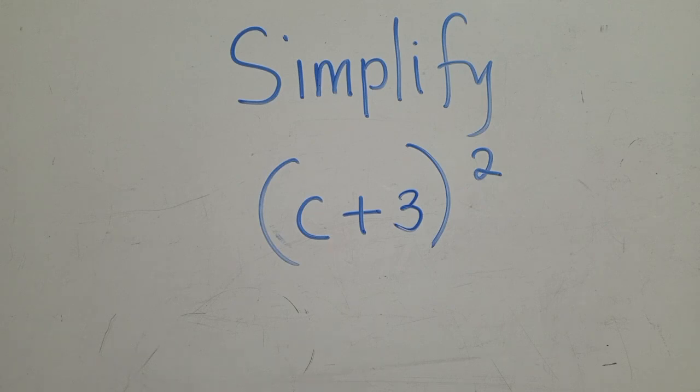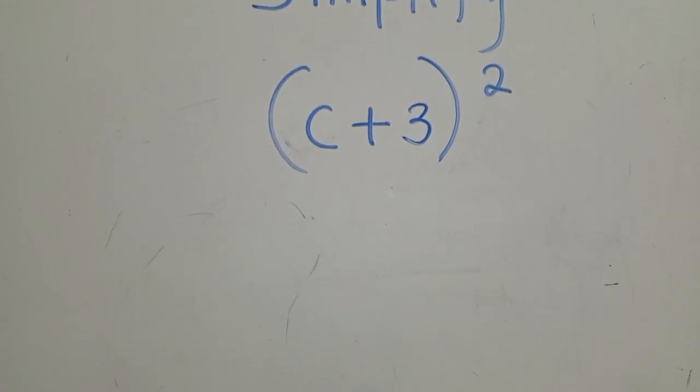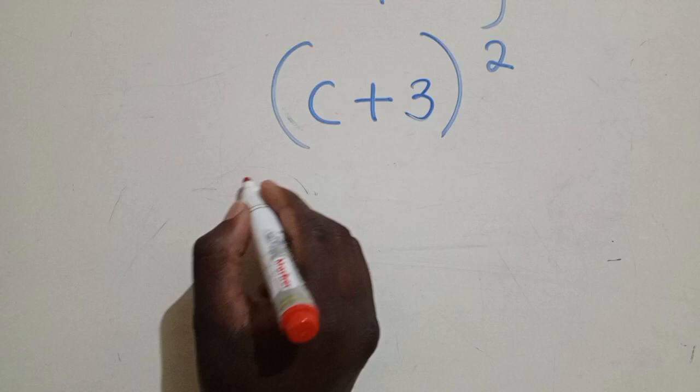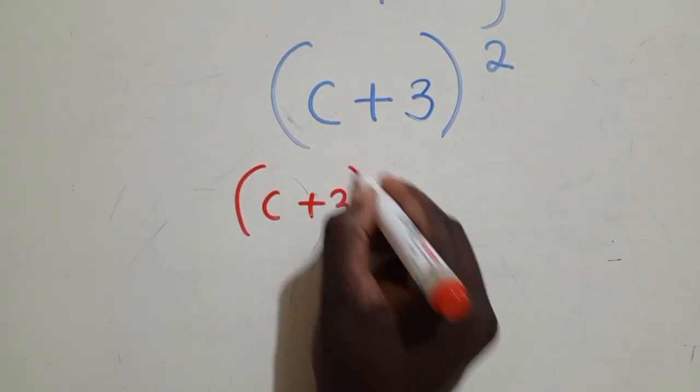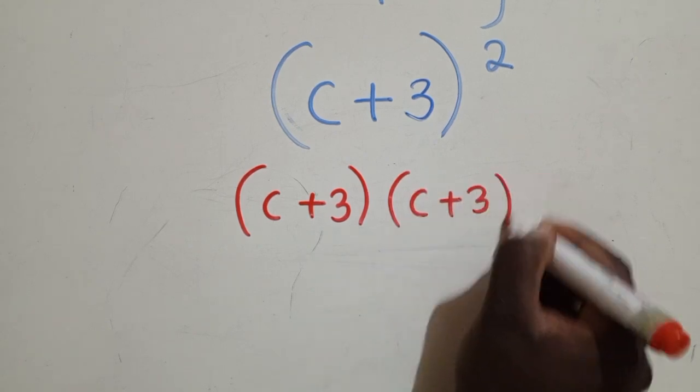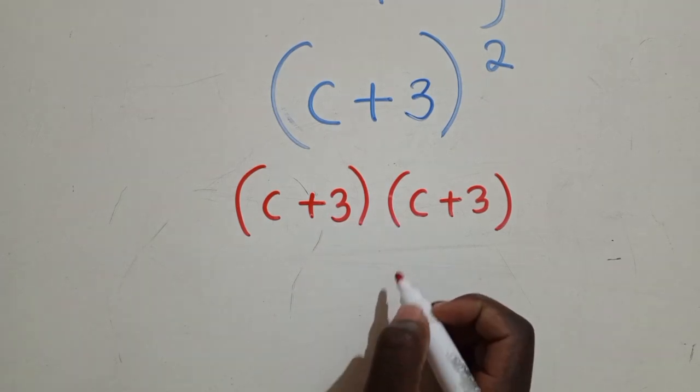Okay, so what it means here, because of the power 2 that you're able to see right here, to simplify this one, we shall have C plus 3, and C here plus 3. So the same thing here is being multiplied by itself.